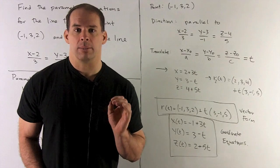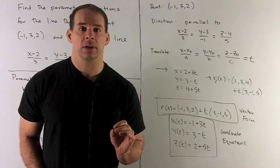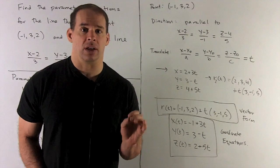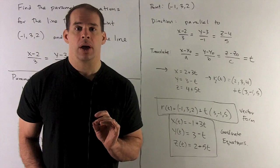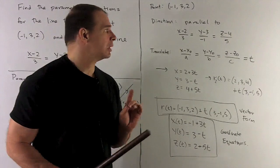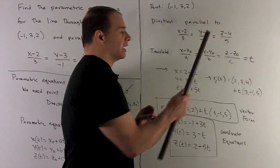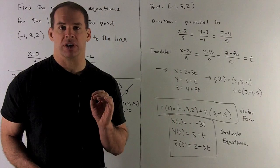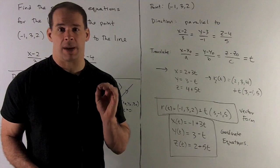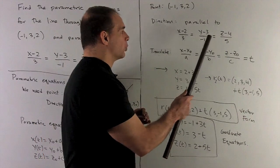We're given the point (-1, 3, 2), so I need a direction. We can borrow the direction from the parallel line. To get a direction from symmetric equations, isolate x, y, and z with no coefficients, then peel off the denominators. The direction we're going to use is 3, -1, 5.